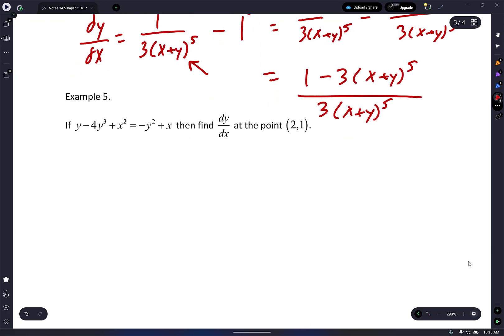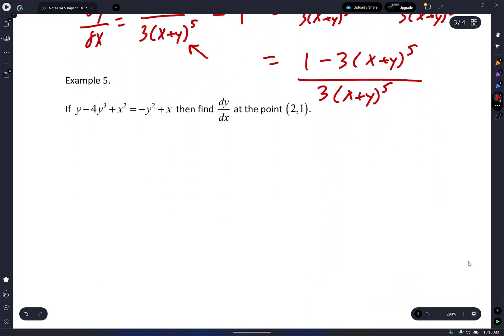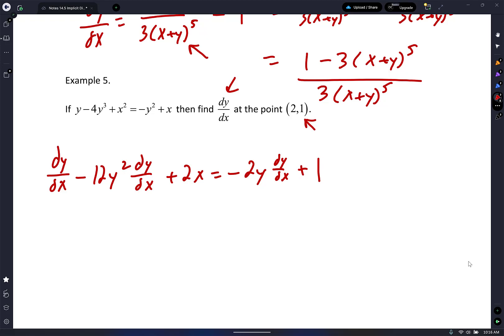Next one guys. Don't worry about writing that down. Let's take a derivative. They want the dy/dx at the point (2, 1). What's the derivative of y? dy/dx. Minus what's the derivative of 4y³? 12y² dy/dx. Plus what's the derivative of x²? 2x. Equals what's the derivative of negative y²? Negative 2y dy/dx. Plus what's the derivative of x? 1. Yeah, you guys are doing awesome. I'm happy. I have purpose.